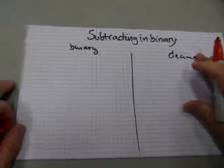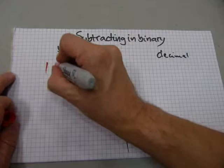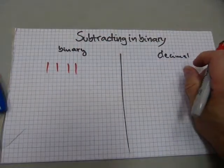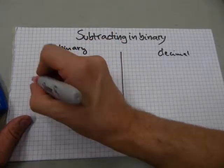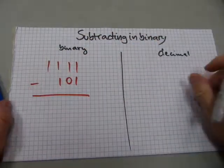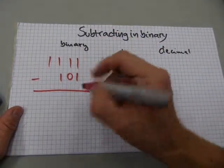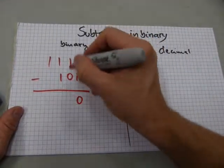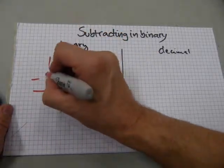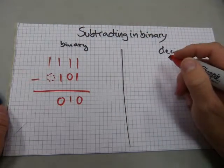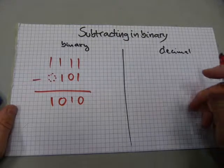Let's get started. In binary, a number could be written as 1111, and from this number I want to subtract 101. It's fairly straightforward: one take away one is zero, one with nothing to take away is one, one take away one is zero again, one take away nothing is one.